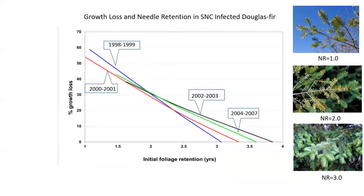These two assessments seem to be the most critical, as pseudothesia density influences needle retention, and needle retention certainly affects growth. This graph shows needle retention versus growth loss, where four colored lines represent different periods of growth. Not surprisingly, for each one, growth is reduced as more and more needles are lost from the branch. The three images on the right represent branches with needle retention values of roughly 1, 2, and 3, which correspond to values along the x-axis.